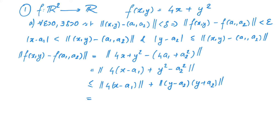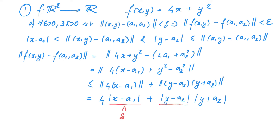Now notice that |4(x − a₁)| = 4|x − a₁| and |y − a₂| · |y + a₂| = |y − a₂| · |y + a₂|. Since we have assumed that ‖(x,y) − (a₁,a₂)‖ < δ, we know that |x − a₁| < δ and |y − a₂| < δ. So if we can ensure that |y + a₂| is not too large, then we can make this sum as small as we want by making δ as small as we want.